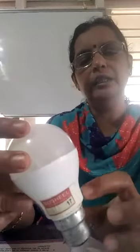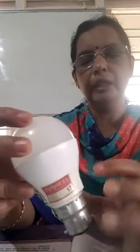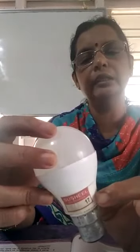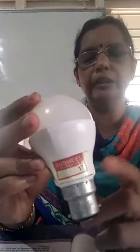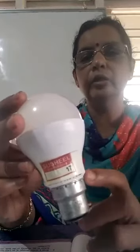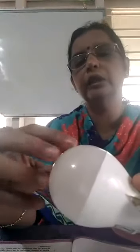If heat is generated, this heat sink will absorb it. Inside this, there is a metallic plate — that is the base plate — which is fixed inside. The next outer part is the diffuser cup, from which the light comes out of the bulb.